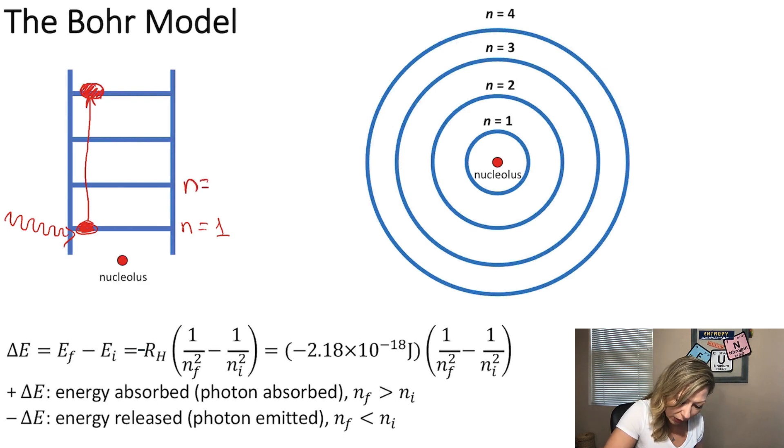So N equals 1, N equals 2, N equals 3, N equals 4. So this means that my atom absorbed energy and the electron transitioned from the N equals 1 ground state to the N equals 4 excited state in a hydrogen atom.